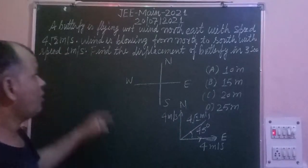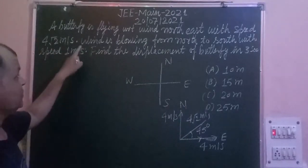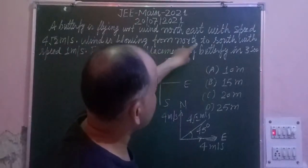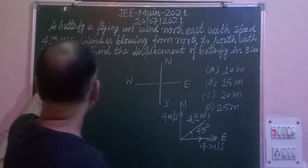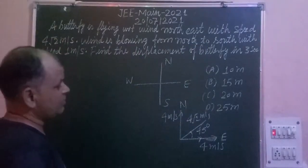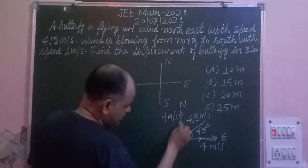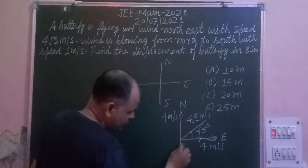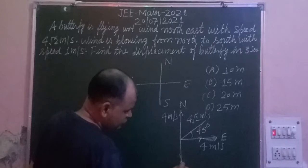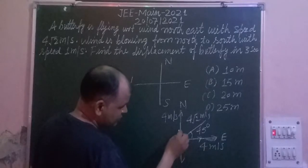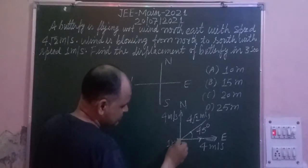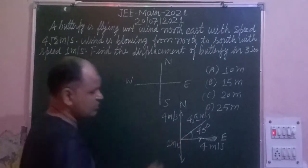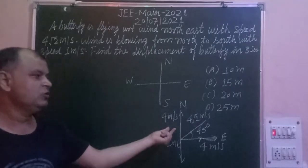Now the question says wind is going from North to South with a speed of 1 meter per second. Wind is going in the North to South direction. So the wind speed is 1 meter per second.